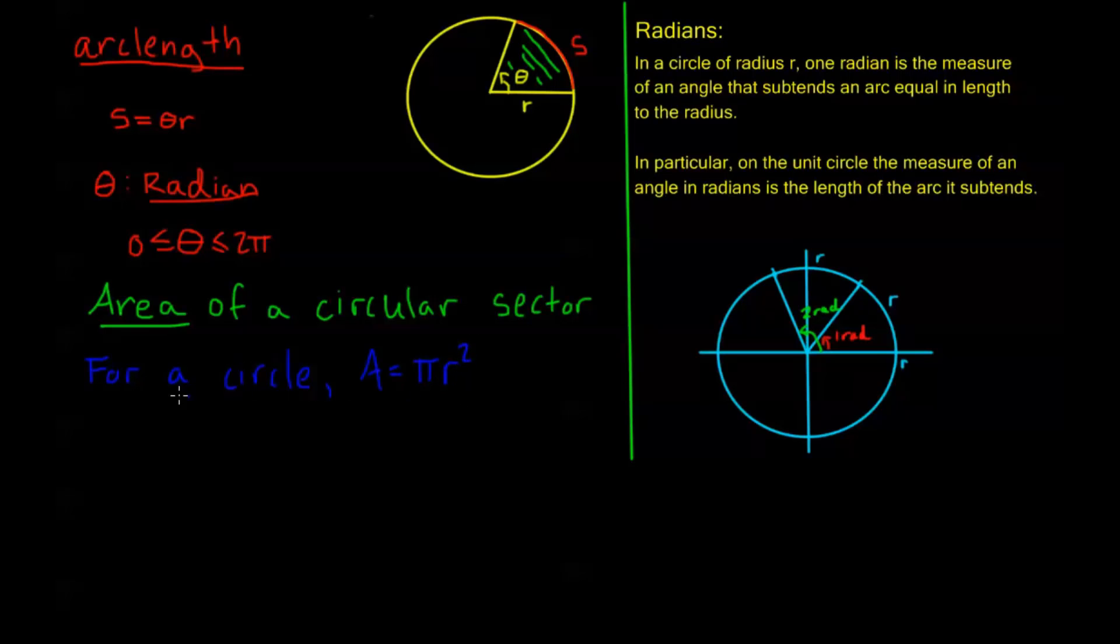But a sector, it's only going to be a portion of this circle, right? A sector is whatever our angle theta is, divided by 2 pi, is you can think of it as a fraction of a circle, right?